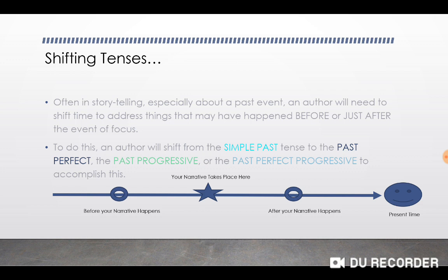I want you to picture your story — your narrative — and it takes place where the star is. I want you to be looking at the timeline at the bottom of the slide. So if your narrative takes place at the time of the star, sometimes in order to give context to that event, you might have to talk about things that happened before your narrative. And sometimes you'll want to update on something that happened after your story, but still might be in the past from where you are in present time. So there's a couple different ways to handle tense in writing.